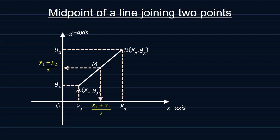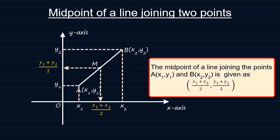We can therefore say the coordinates of the midpoint of the line joining the two points A and B, where A is x1, y1 and B is x2, y2, can be given as x1 plus x2 all over 2 and y1 plus y2 all over 2.